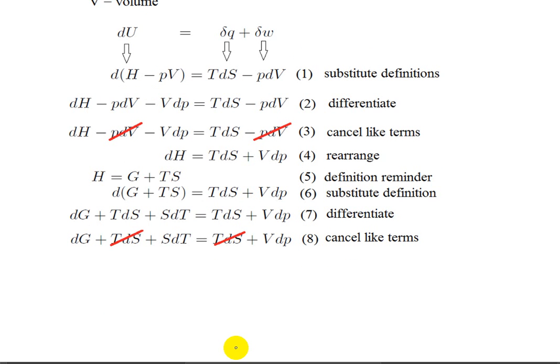In line eight, just like before in line three, we're going to cancel the like terms. In this case, it's TdS that appears on both sides of the equation.